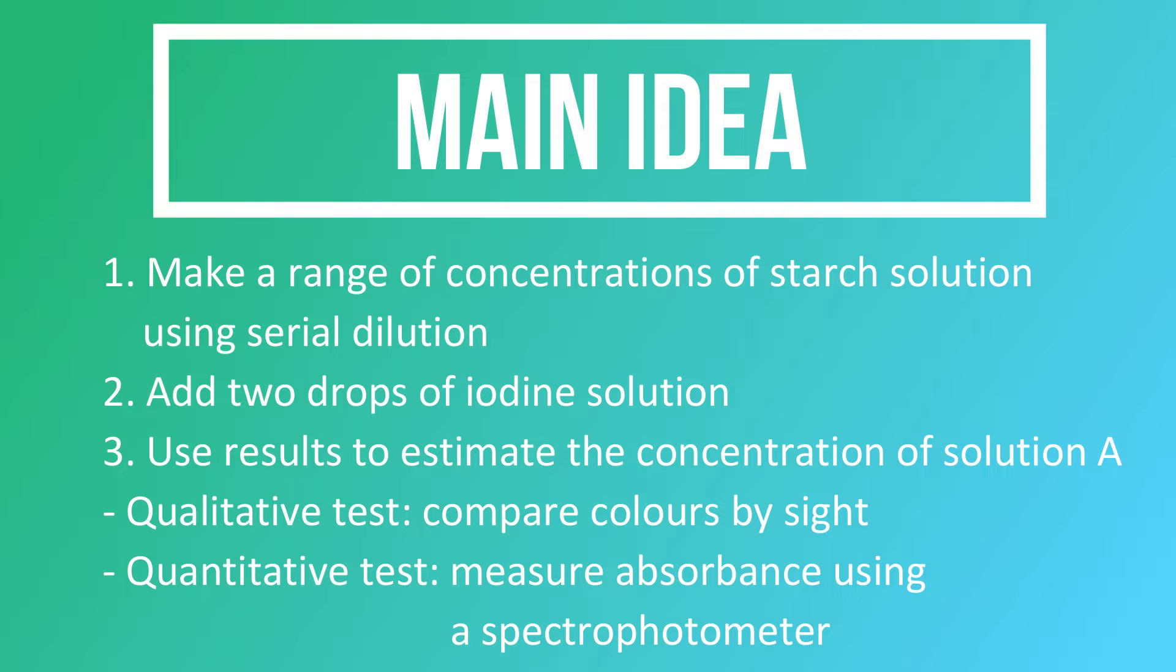First of all, we are going to conduct serial dilution and produce a range of concentrations of starch solution. And then, we are going to perform an iodine test by adding two drops of iodine solution into each concentration. Then we can use these results and compare with the results we get for solution A in order to estimate its concentration.